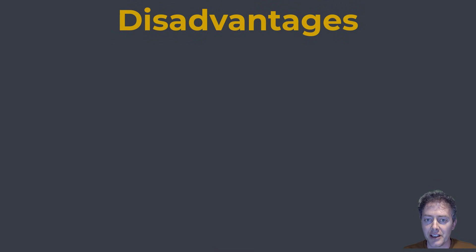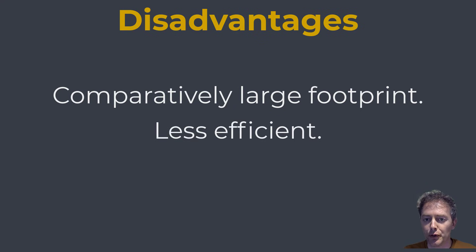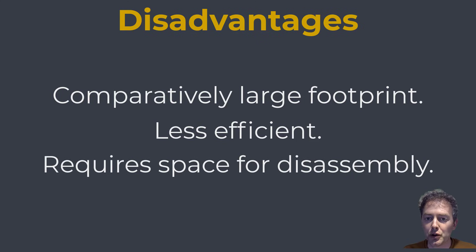There are, however, some disadvantages associated with shell and tube heat exchangers. The biggest is the large footprint they require compared to other types such as a plate heat exchanger. They're also less efficient for low flow and low temperature applications. Another inconvenience is that when you disassemble the heat exchanger to perform maintenance, you may require a lot of space — in order to pull the tubes out, the surrounding area needs a minimum of one tube length of space.